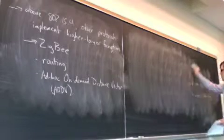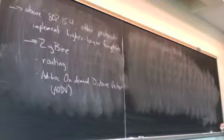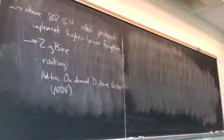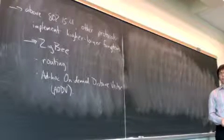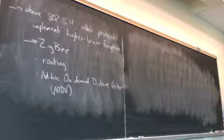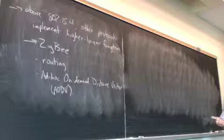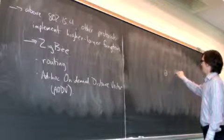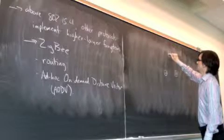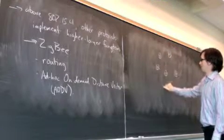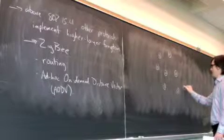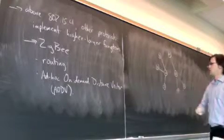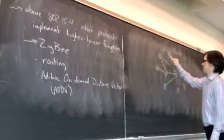So the future of the RFD is that it's only allowed to connect to full function devices. However, in peer-to-peer topology, you're not stuck with the star. So for instance, I have an FFD, and an FFD, and an RFD, and a bunch of RFDs. In star topology, I would have to do something like this. But in peer-to-peer, other arrangements are possible.